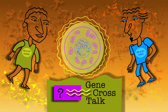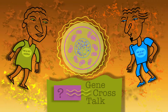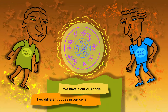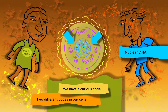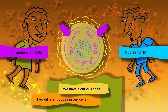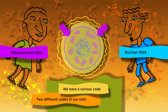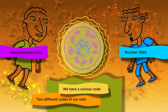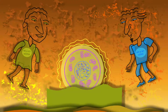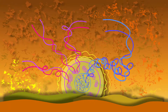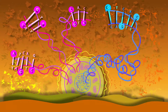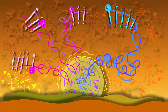Gene crosstalk. What is it? We have a curious conversation in our code between two different DNA codes in our cells. DNA in the nucleus, right there in your chromosomes. DNA in the mitochondria — an organelle with its own genes. And they talk to each other. They exchange information about changes in their genes, their mutations, so they can evolve together. They crosstalk for co-evolution.